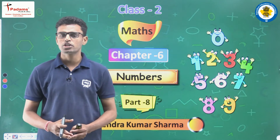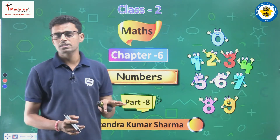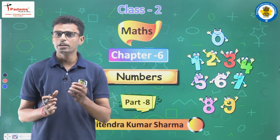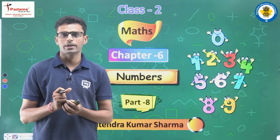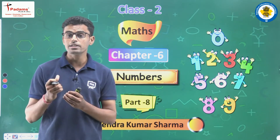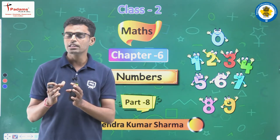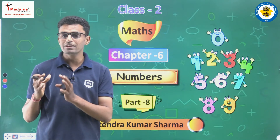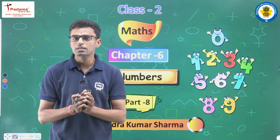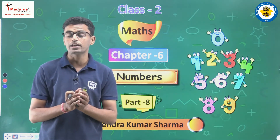Hello students, I am Jitendra Kumar Sharma, your math teacher. Today we will continue with Chapter 6 of Class 2 — the chapter name is 'Numbers'. In the previous seven parts, we learned what numbers are, that a group of 10 things is called a bundle, and we counted from 10 up to 50. We also learned to write numbers in expanded form and standard form.